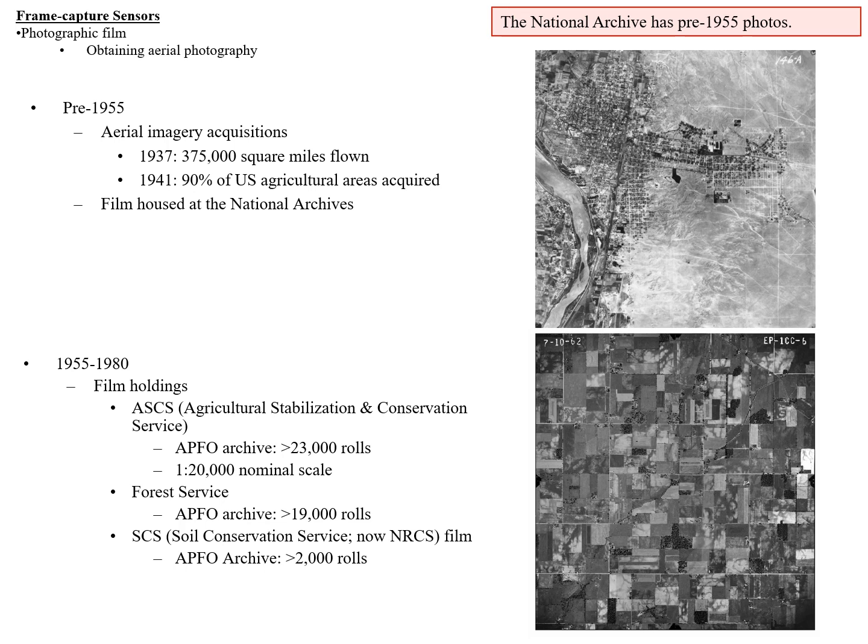From 1955 to 1980, the film holdings at the APFO include imagery from the Soil Conservation Service — and prior to that the Agricultural Stabilization and Conservation Service — more than 23,000 rolls at a 1:20,000 nominal scale. They've also got about 19,000 rolls of Forest Service film for National Forests, and about 2,000 rolls of later Soil Conservation Service film.